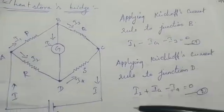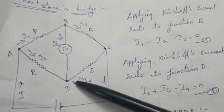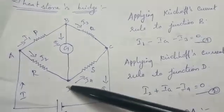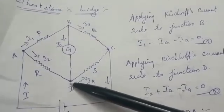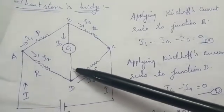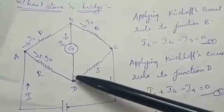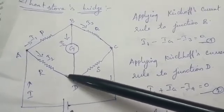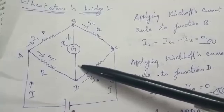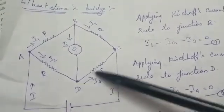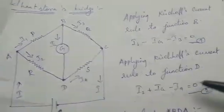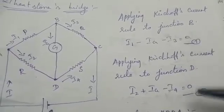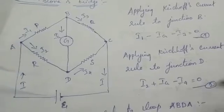Applying the same rule at junction D: there are three current values — I2, Ig, and I4. Towards the junction: I2 and Ig are positive; away from the junction: I4 is negative. So: I2 + Ig − I4 = 0. That is equation number two.